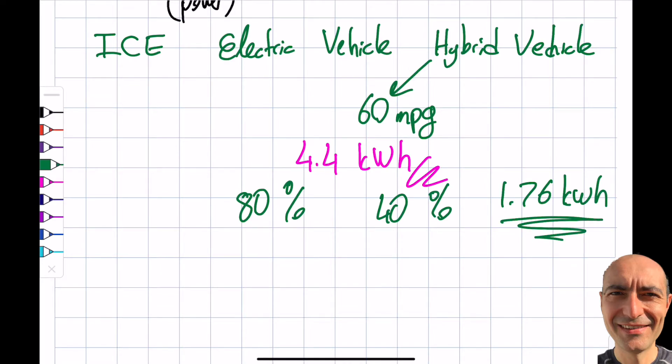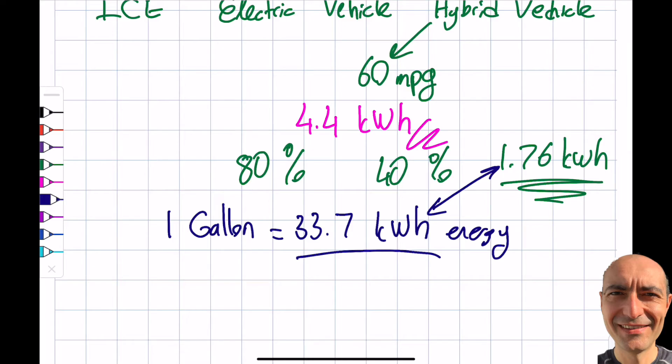How much gasoline does this correspond to? For that I need a conversion. One gallon and the energy contained in one gallon of regular gas is 33.7 kilowatt hours. I go with the US government's EPA website. So if I convert this, you can see the content of the battery is only 1.76 kilowatt hours. If I convert this to gallons, you can see this is almost 20 times. The content of the Prius battery is 0.05 gallons. For international, let's convert this to 200 milliliters.